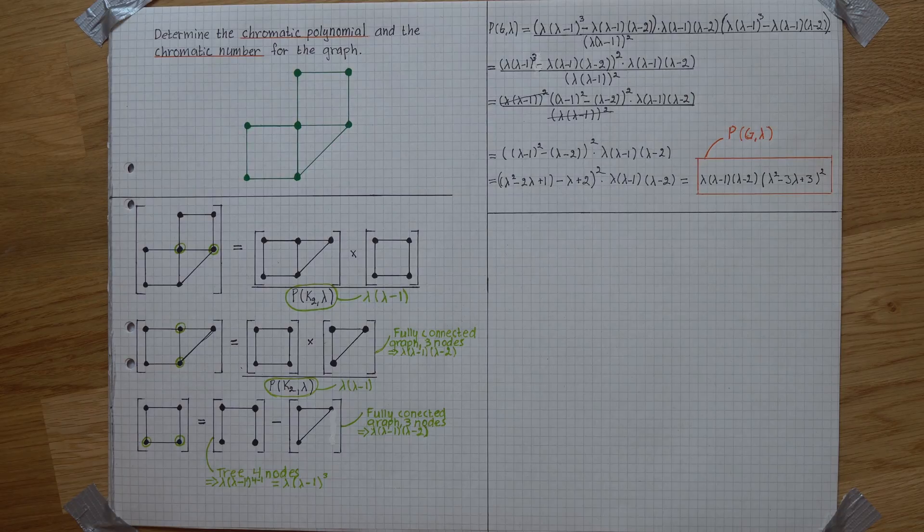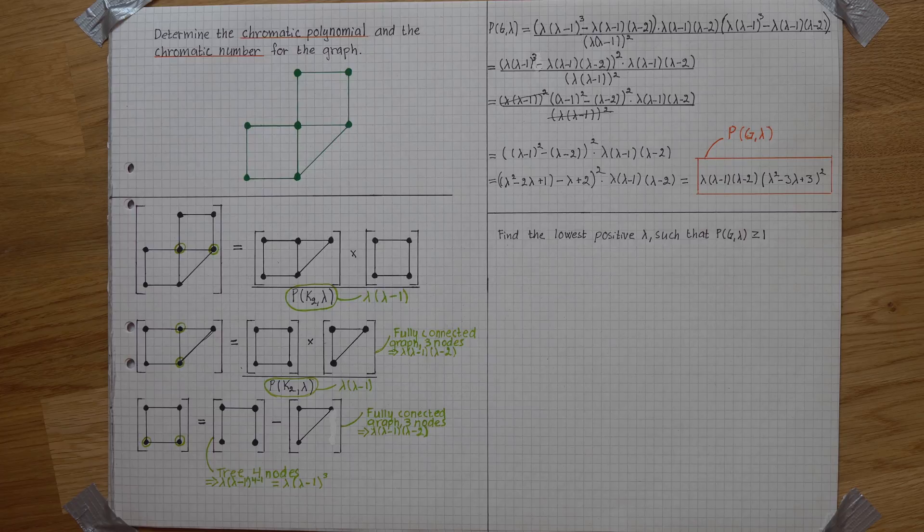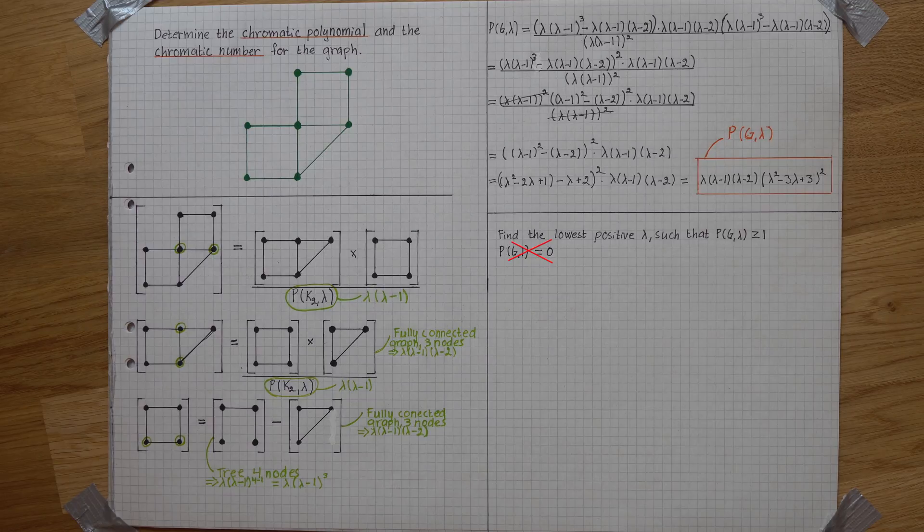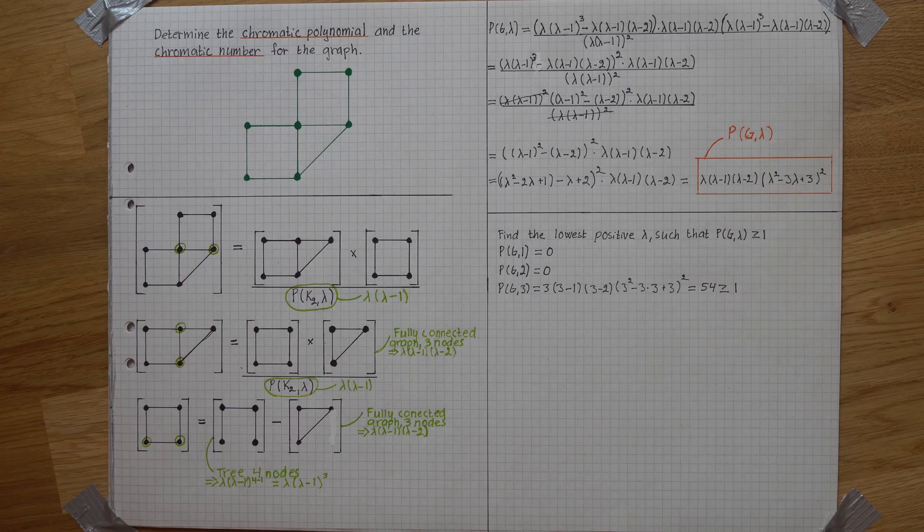We'll now use that to determine the chromatic number by finding the lowest positive λ such that it is equal to or greater than 1. This is not the case for 1 nor 2, but it does work for 3, which means our chromatic number is 3.